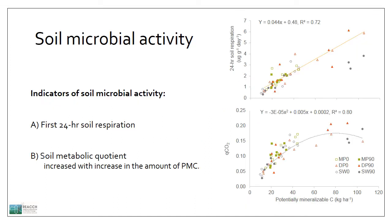When we looked at microbial activity indices in response to soil mineralizable carbon content, we found that 24-hour soil respiration increased linearly with increasing potentially mineralizable carbon content, indicating that 24-hour soil respiration could represent potentially mineralizable carbon content well. Soil metabolic quotient — the ratio of mineralizable carbon to microbial biomass — did not increase linearly with mineralizable carbon content, indicating that microbial biomass response to mineralizable carbon was constrained by other environmental factors at higher mineralizable carbon availability.